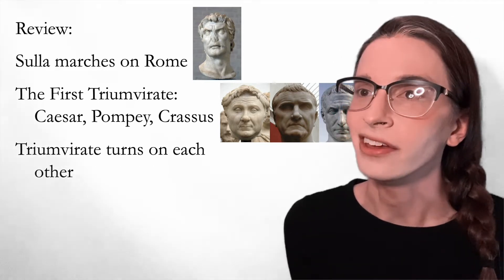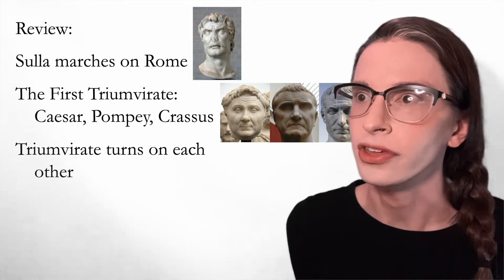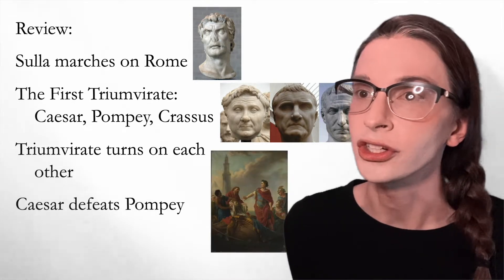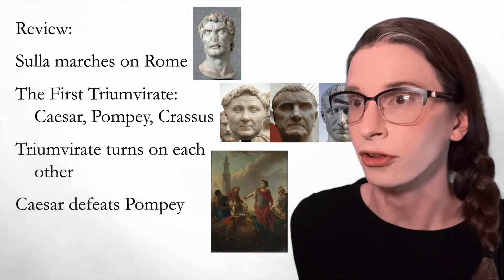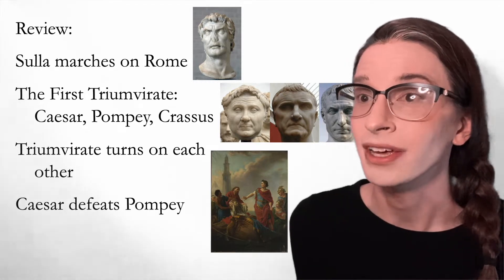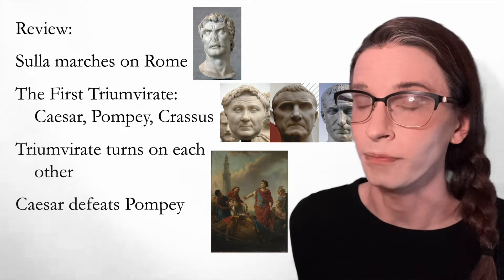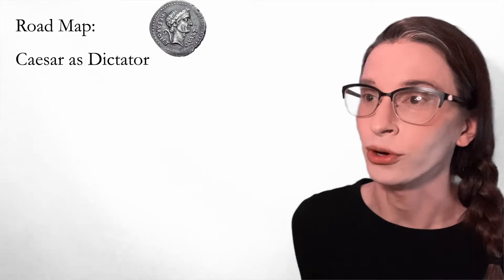Crassus dies in a military defeat in the Middle East, then Pompey turns on Caesar. Caesar marches his legions on Rome and defeats Pompey in battle in Greece. Pompey is then murdered in Egypt. Now Caesar is the undisputed sole ruler of Rome. Caesar sticks around in Egypt for a while, consolidating Roman power in the East before coming back to Rome and ruling as its perpetual dictator.